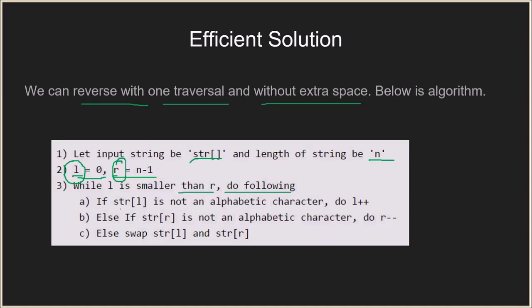Inside the while loop: if the character at position L is not alphabetic, we do L++ to increment the index. Else if the character at index R is not alphabetic, we do R-- to decrement it. If both of these conditions are false — meaning the characters at both index L and R are alphabetic — then we swap them. We keep doing this, starting one pointer from the left and one from the right, finding the next alphabetic character from each side and swapping them as we encounter them.